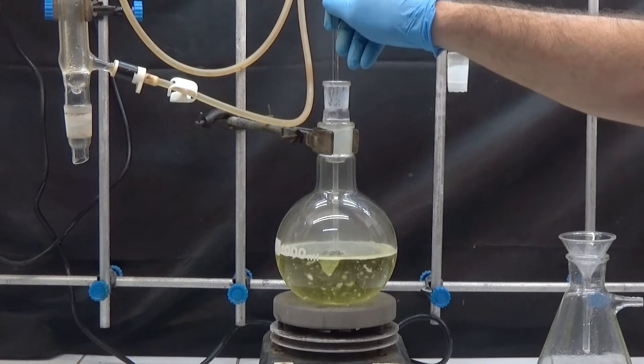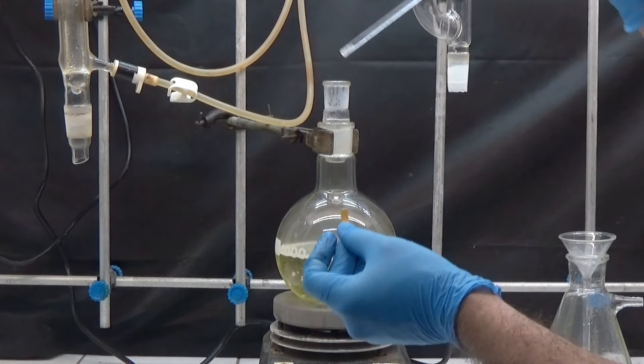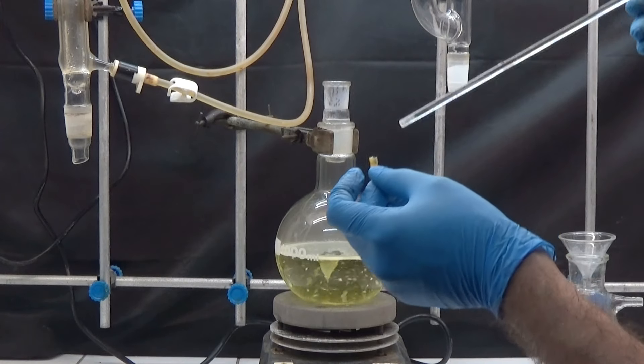After adding 50 milliliters of ammonia, we check the pH. We continue adding ammonia until the pH to be alkaline.